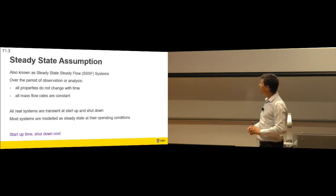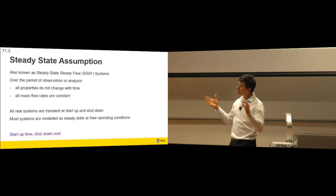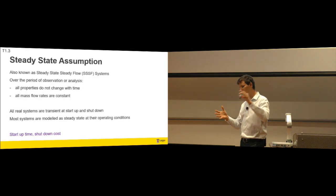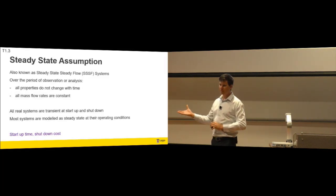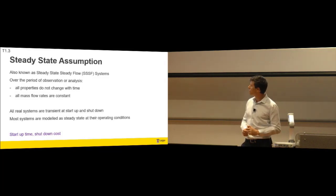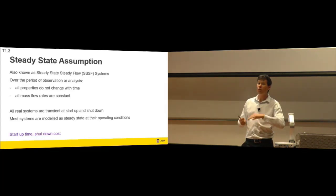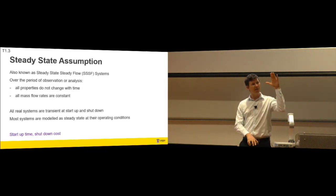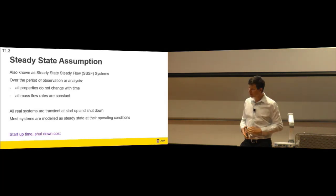So this means that over the period of our observation, so after run-up and before cool-down, the properties don't change with time. Properties like the temperature at a location, the specific enthalpy at a location, those sorts of things. And if there's mass flow, that also doesn't fluctuate. The mass flow doesn't change with time. Using an early analogy, the bathtub isn't filling up or emptying, it's maintaining its level.